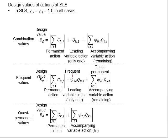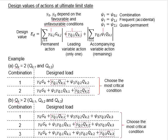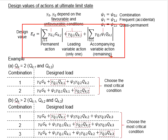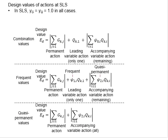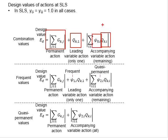For the design at the serviceability limit state, all partial factors of safety for variable and permanent actions are taken as 1.0. The same equation applies, but with γG = γQ = 1.0. For the combination value, it will be the summation of Gk plus the leading variable plus the remaining accompanying variables multiplied by the reduction factor ψ₀.